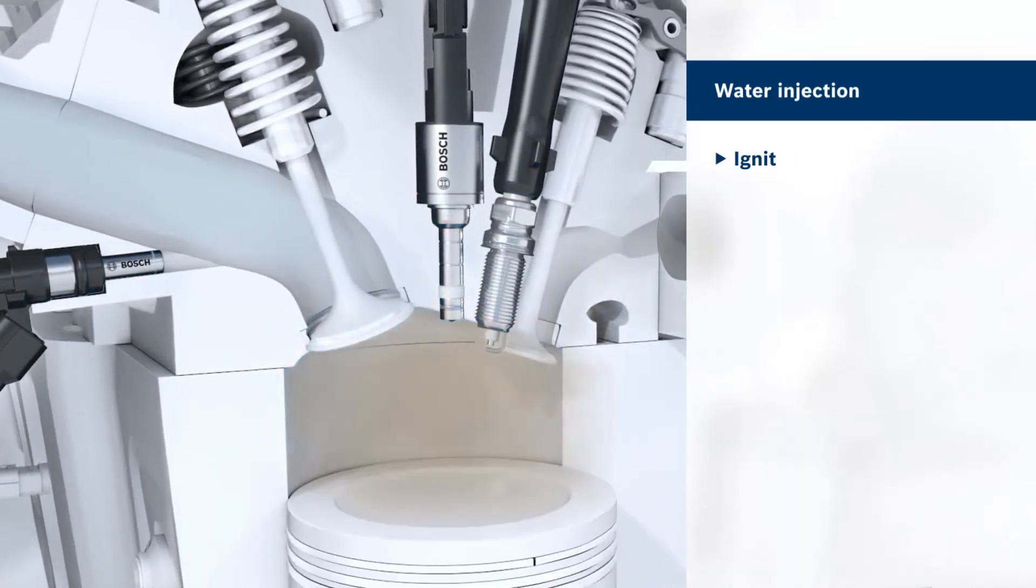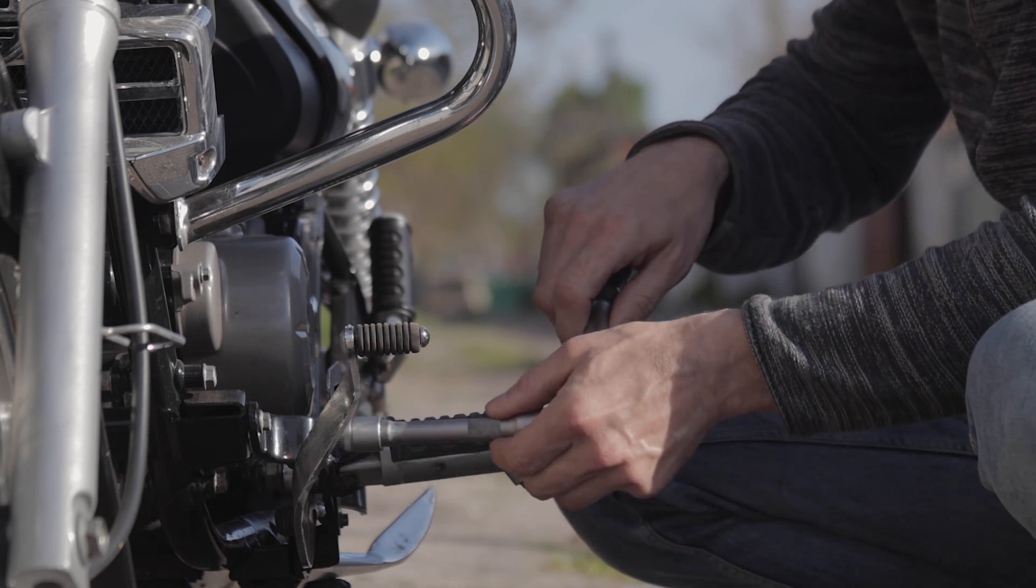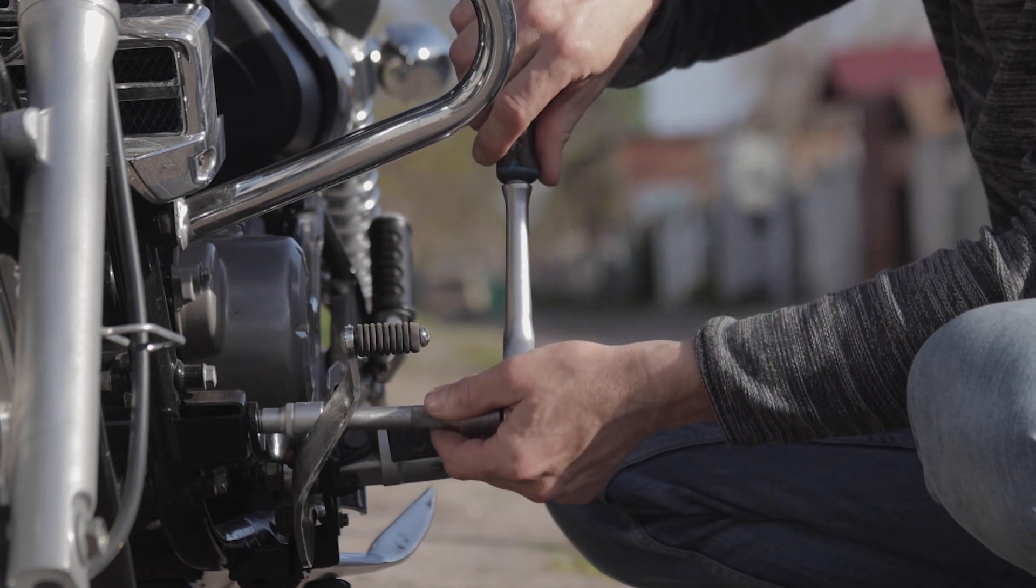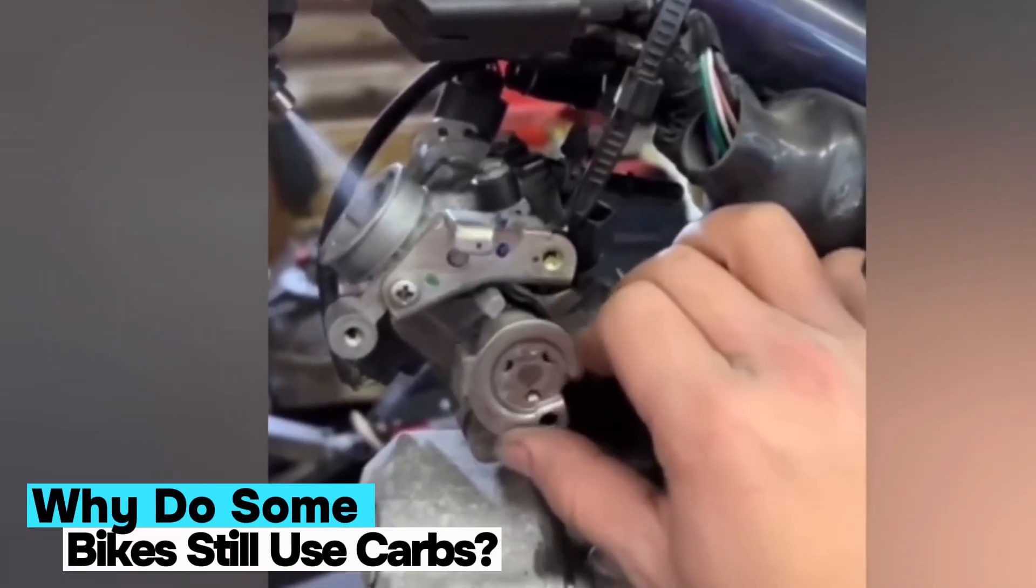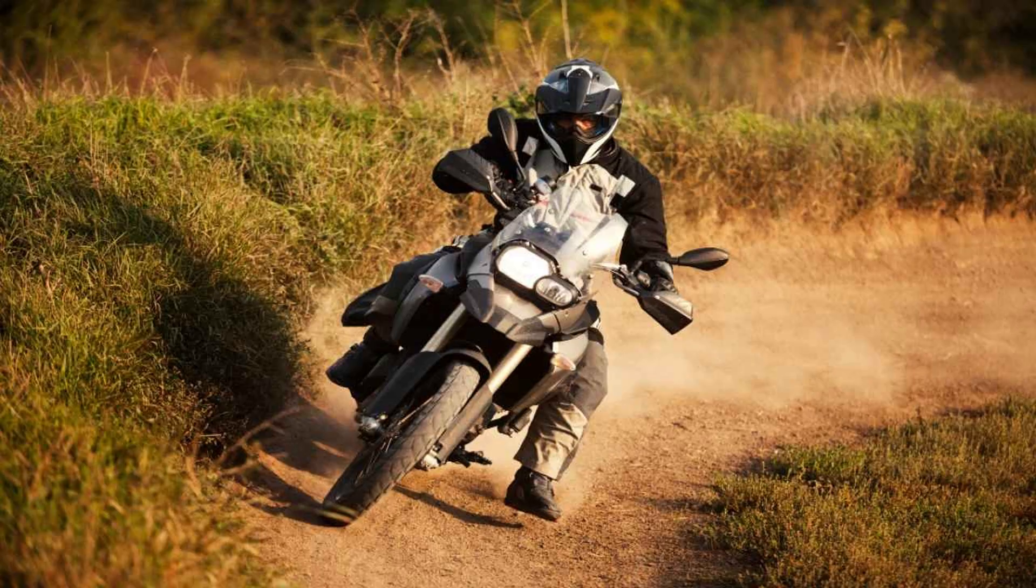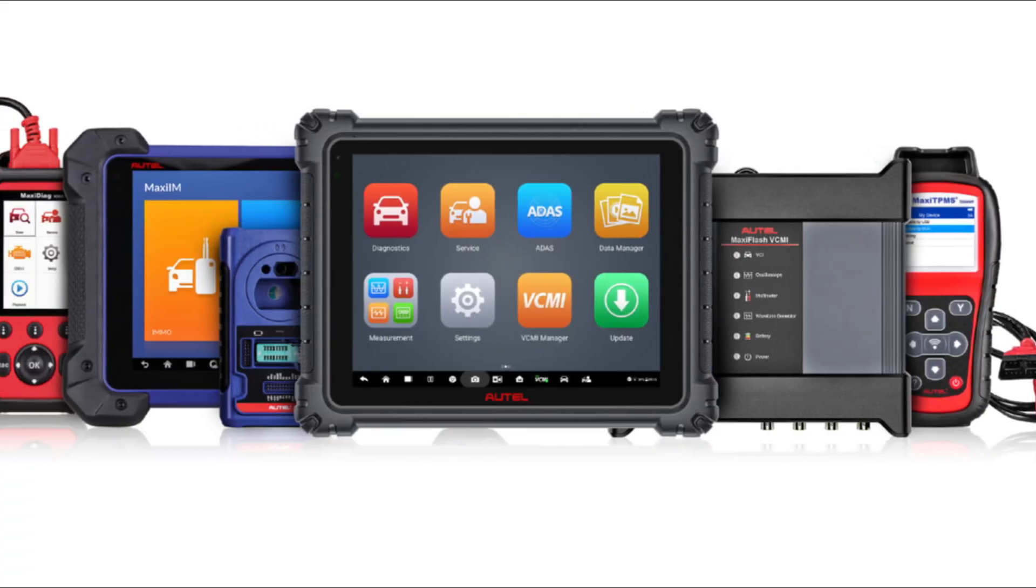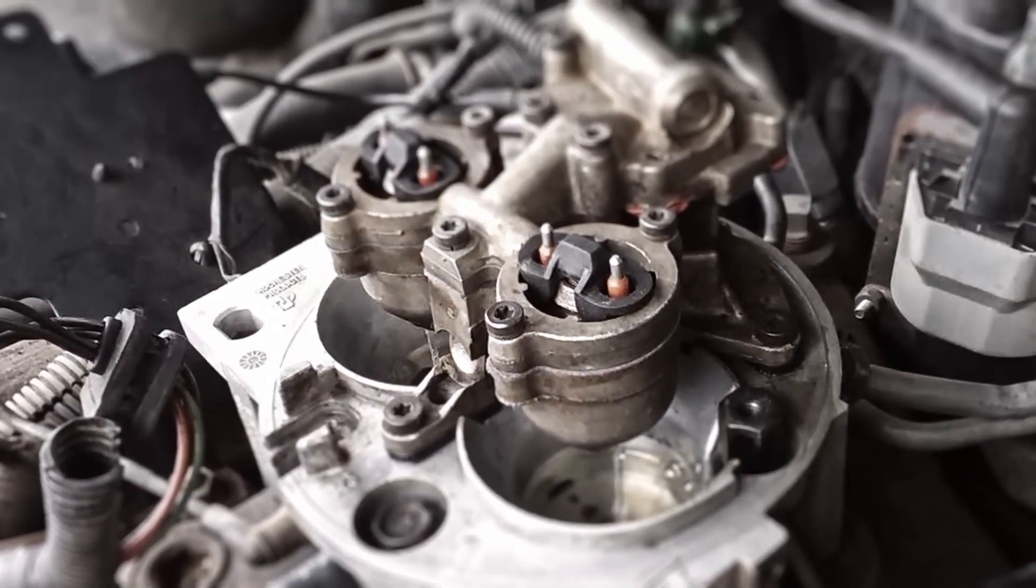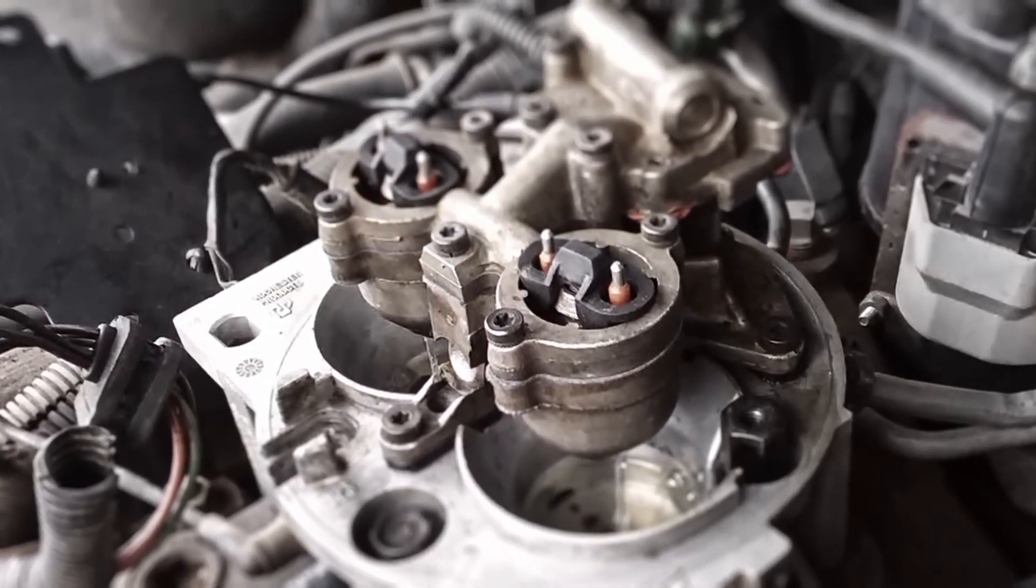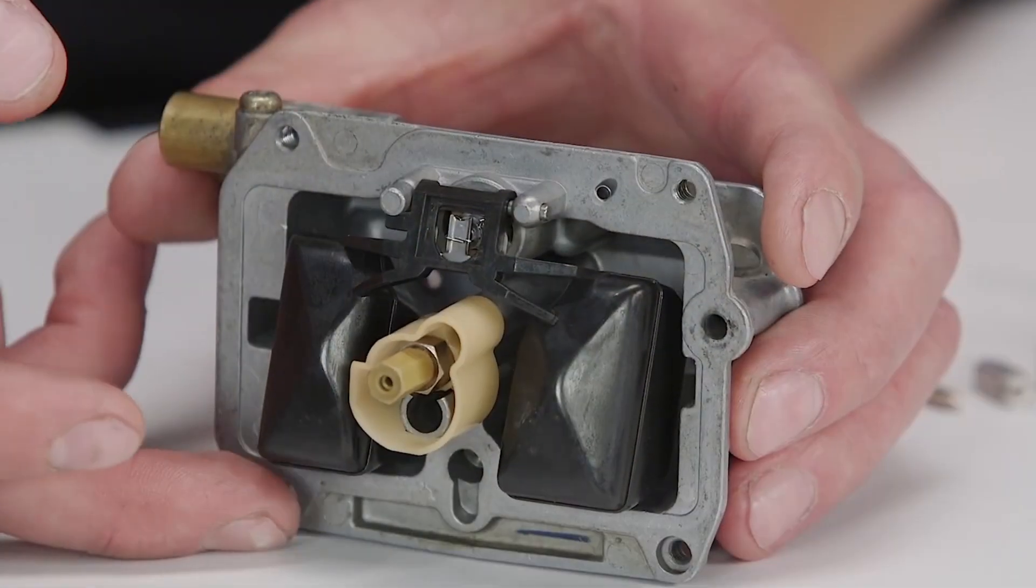But if EFI is so efficient and clean, why do some riders still swear by carburetors? There's more to this than emissions and tech. Some smaller bikes, scooters, and off-road machines still use carbs because they're cheap, proven, and easy to fix. In parts of the world where access to diagnostic tools or replacement sensors is limited, a carburetor's simplicity is a huge advantage. And for garage tinkerers and DIY lovers, carburetors are a dream.